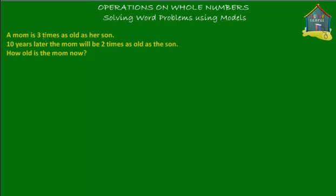A mom is three times as old as her son. Ten years later, the mom will be two times as old as the son. So after 10 years, mom becomes two times as old as the son.